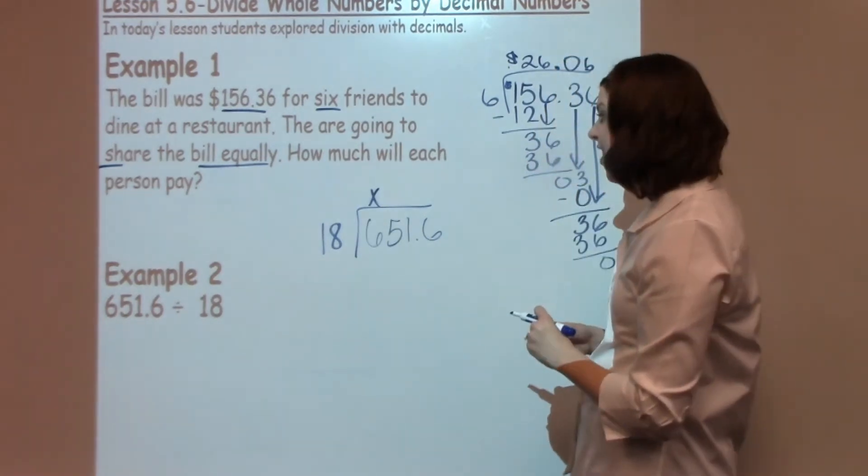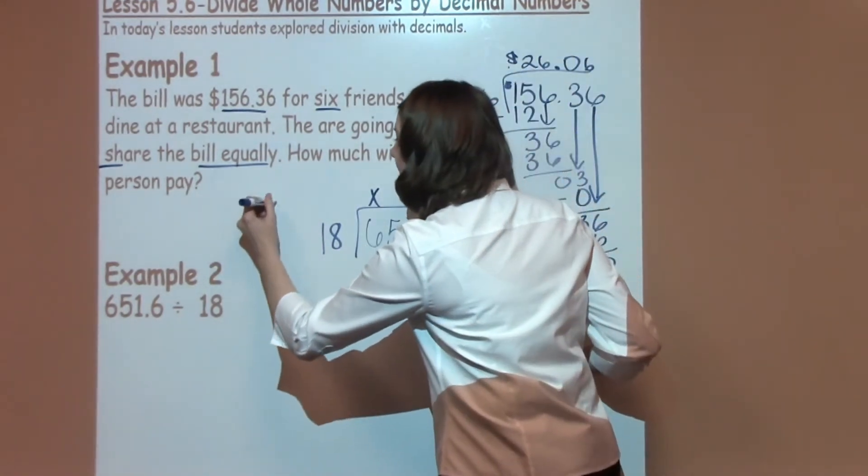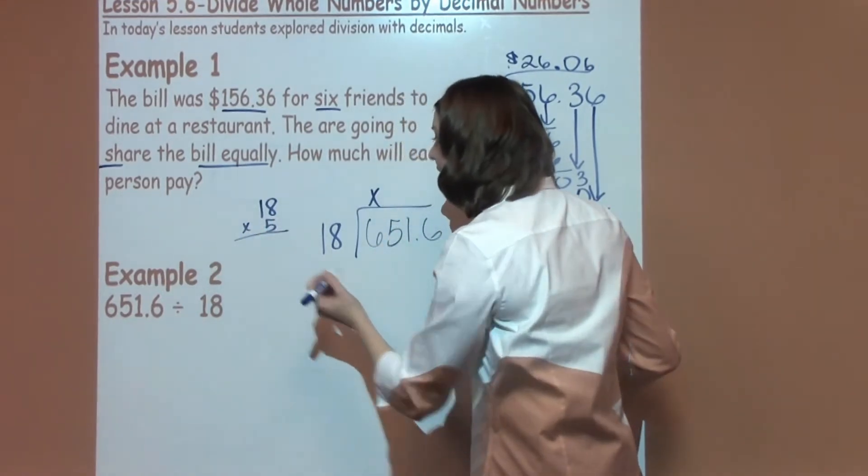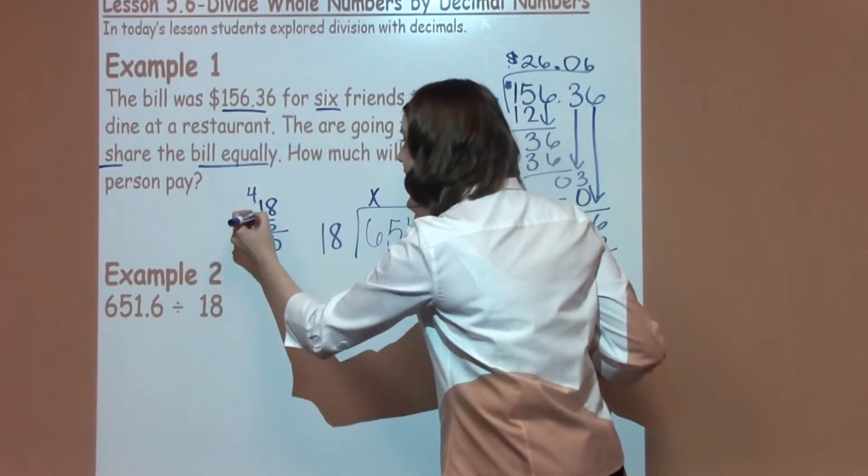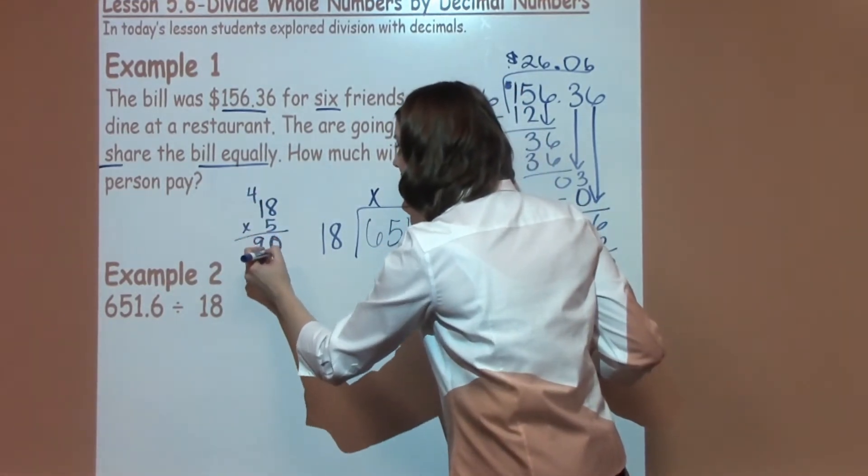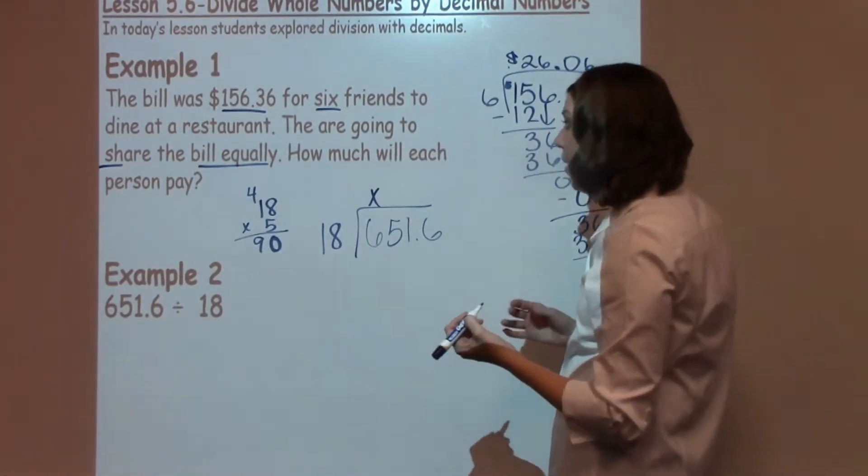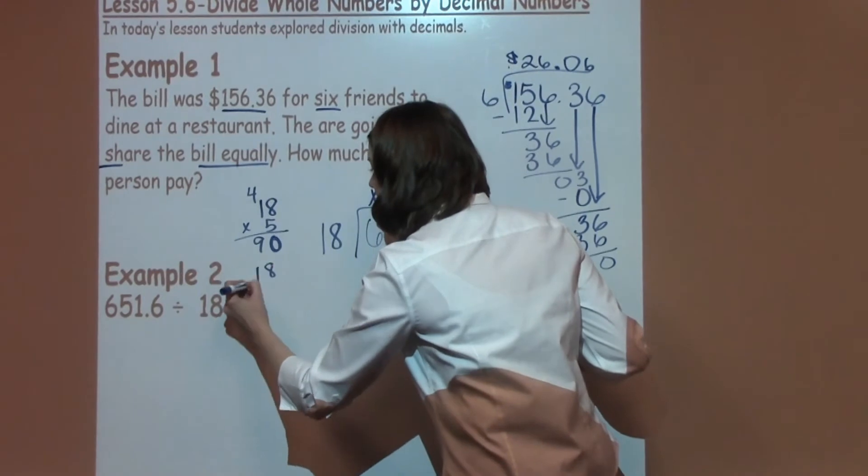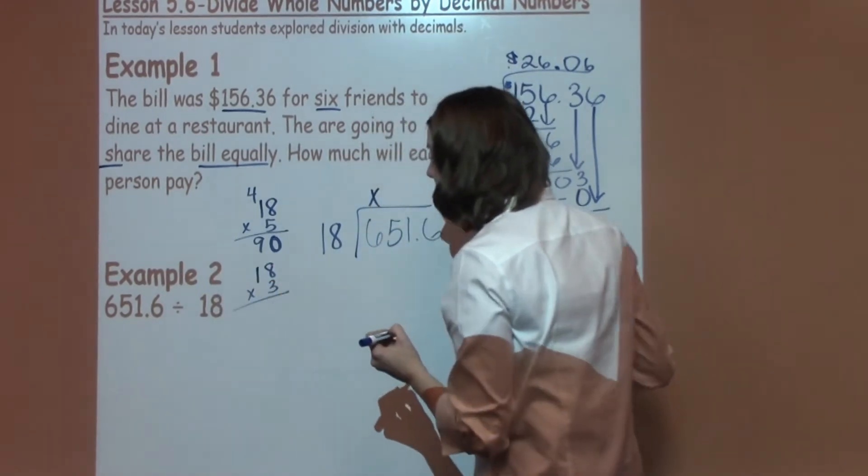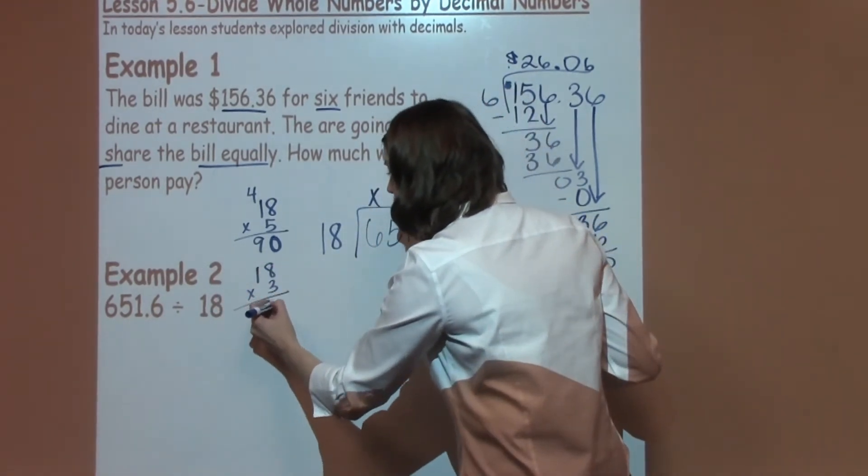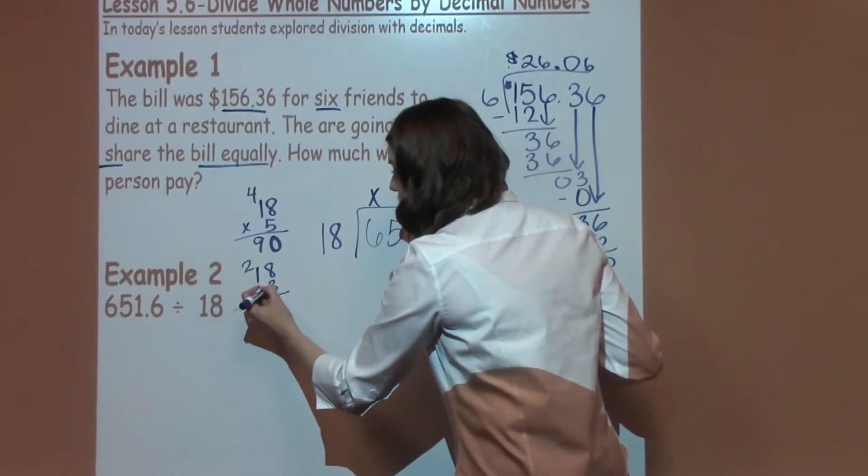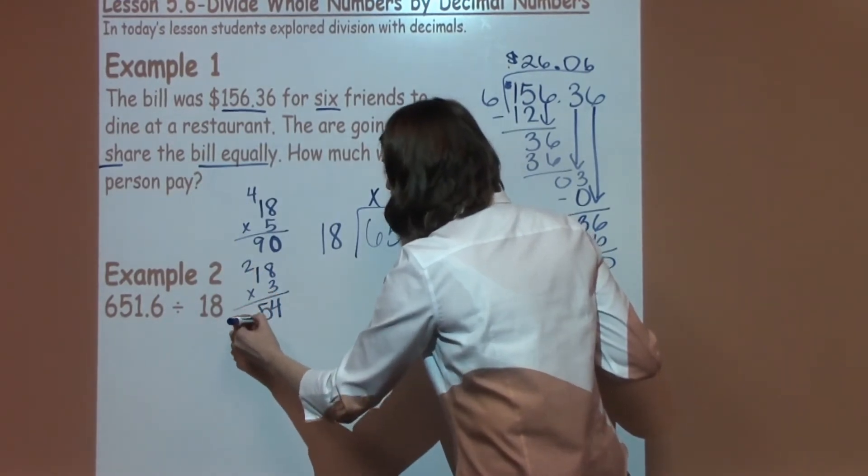I'm going to take eighteen times five as my starting spot. I have forty, so I have ninety. Looking at that, I know it's a little bit too much, so I'm going to try eighteen times three. Eighteen times three is twenty-four. I have one times three, which is three, plus two more is fifty-four.